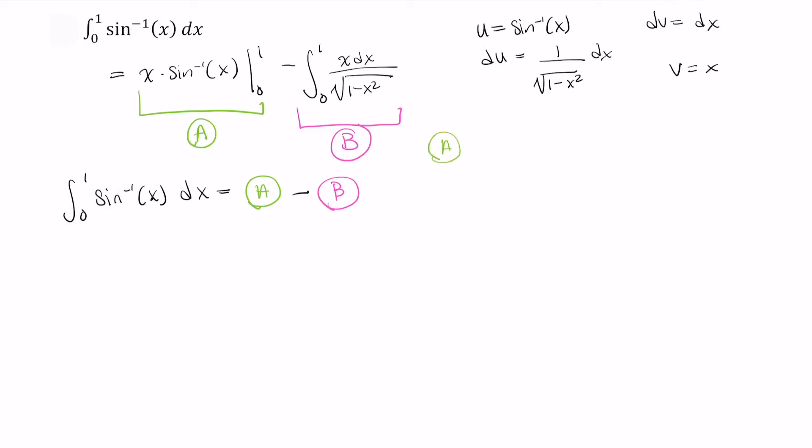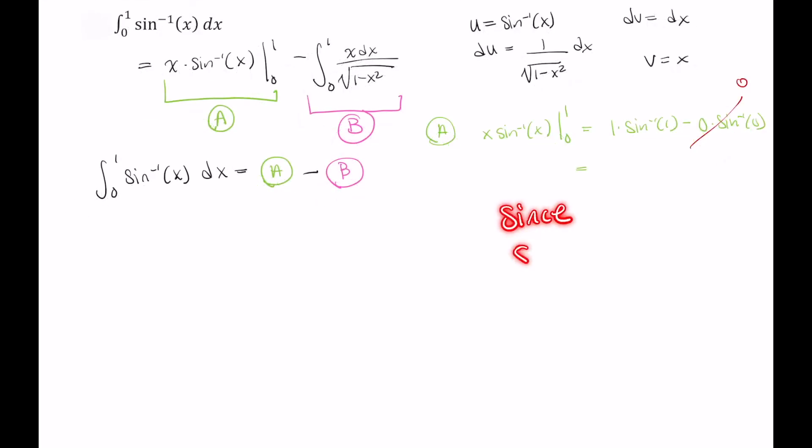First A. X sine inverse of x evaluated from 0 to 1. That's equal to 1 times sine inverse of 1 minus 0 times sine inverse of 0. 0 times anything is just 0, so this term vanishes. And we're left with just the inverse sine of 1. Since the sine of pi over 2 is equal to 1, it follows that sine inverse of 1 is equal to pi over 2.